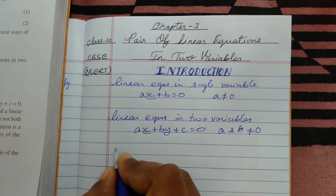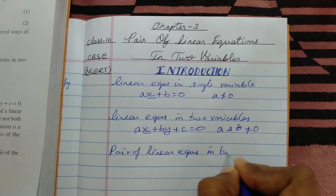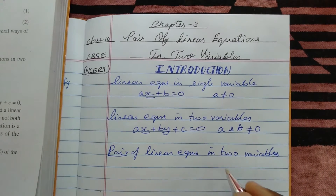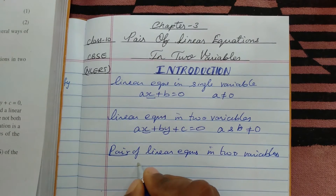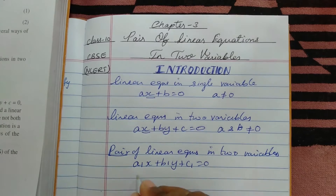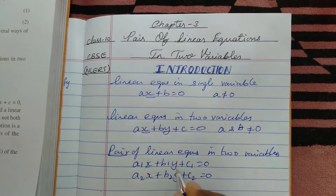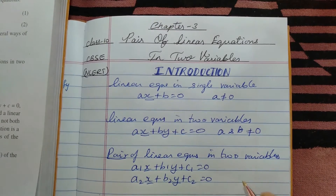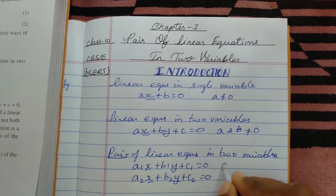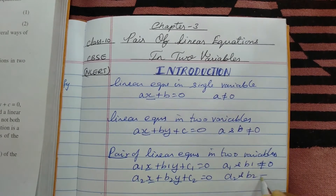Now, a pair of linear equations in two variables means there are two linear equations. They are generally written as: a1x + b1y + c1 = 0 and a2x + b2y + c2 = 0, where x and y are the two variables. The condition is that a1 and b1 must not be equal to 0, and similarly a2 and b2 must not be equal to 0.